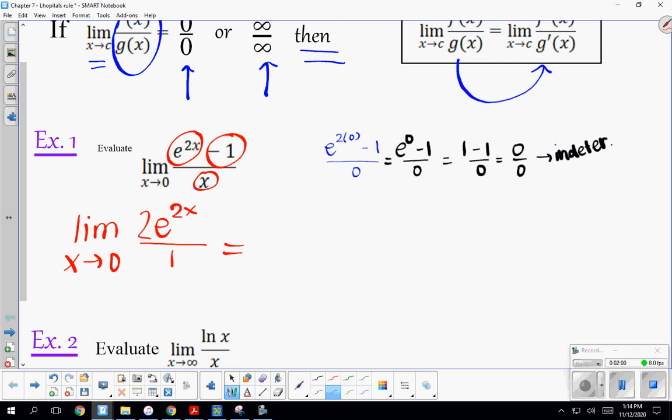Now we try direct substitution again with this new function. We get 2e^(2×0) over 1, or 2e^0, which is 2 times 1 or 2.